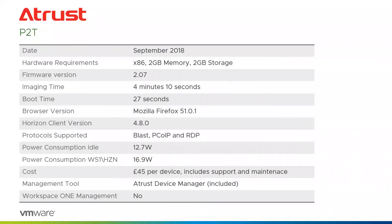Next up was ATrust. We were able to test more recently because a firmware update included the latest Horizon client. It has all three protocols; the difference is that Firefox was the only browser — no Chrome, which is just an observation. Boot time was very quick at 27 seconds, imaging time just over four minutes, and power consumption was pretty low. From a price point of view, very low cost: £45 per device including support and maintenance.